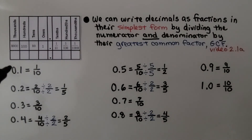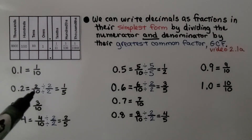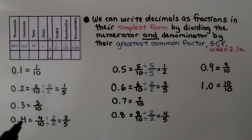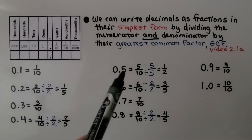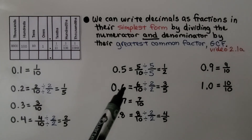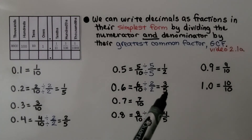If we see the decimal 0.1, that's equal to 1 tenth. 0.2 is 2 tenths — we can simplify it by dividing the numerator and denominator by 2, so it's equal to 1 fifth. 0.3 is 3 tenths. 0.4 is 4 tenths, which simplifies to 2 fifths. 0.5, as we saw, is 1 half. 0.6 is equal to 6 tenths, which can be simplified to 3 fifths.